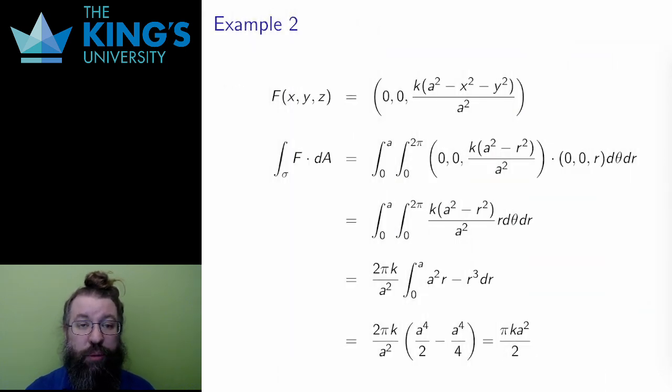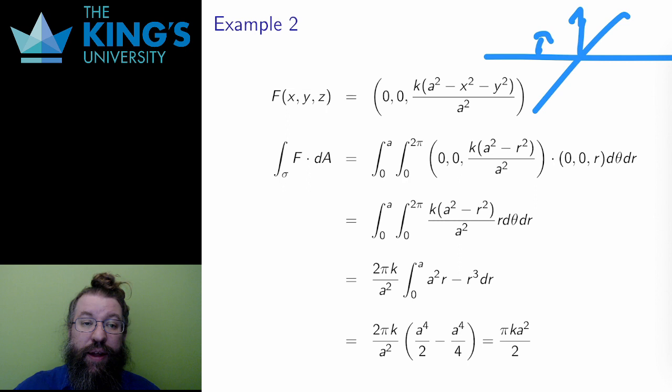And here's another example with the same surface. The field here is still vertical, but it's no longer constant. Instead, this field decreases towards the edge of the disk. I could think of both of these as descriptions of water flowing through a pipe, where the surface is some cross-section at some point in the pipe.